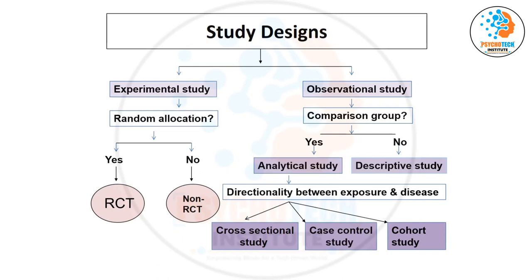For example, even if you use a random list, if that list is visible to you, you can still manipulate allocation. If I know the third patient is going to receive treatment A, I can switch the second and third patients. So even with randomization, if the allocation sequence is known in advance, there is still the possibility of bias — which is why allocation concealment is also an important quality criterion in RCTs.